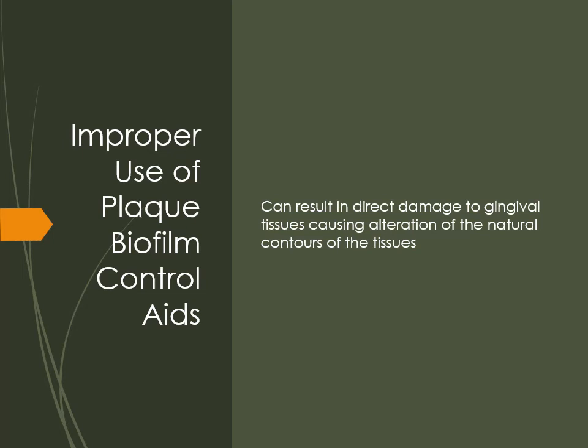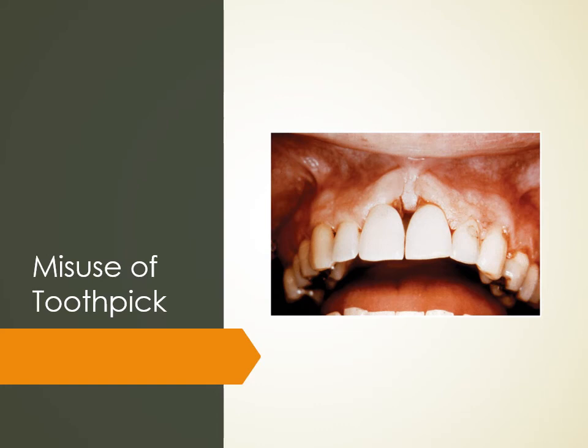Improper use of plaque biofilm control aids results in direct damage to gingival tissues, causing alteration of the natural contours of the tissue. If someone is constantly picking away at the areas between their teeth, they can damage the tissue and cause it to recede.